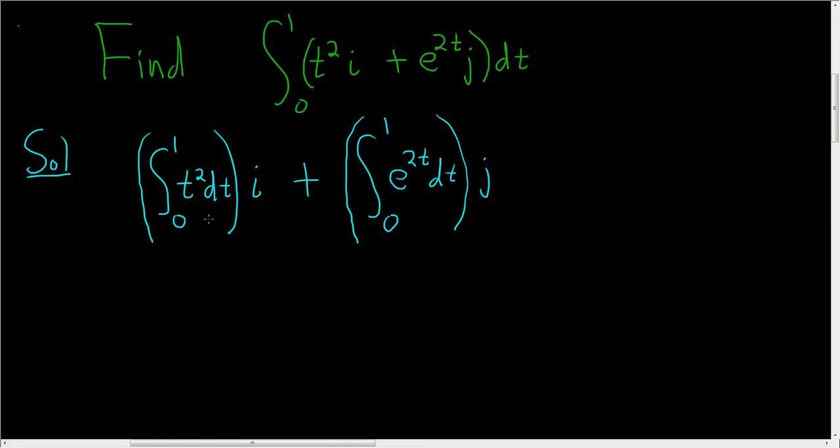To integrate the first piece, we'll just use the power rule. We'll add 1, so we get t cubed over 3. We're going from 0 to 1, this is a definite integral, and we still have the i plus.